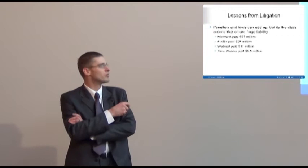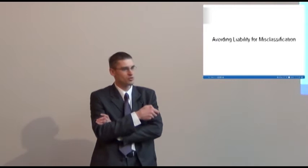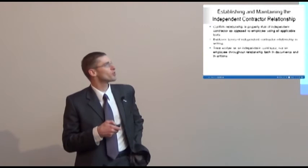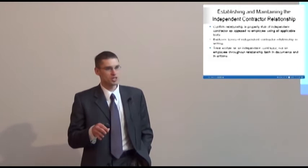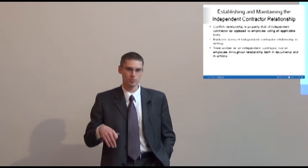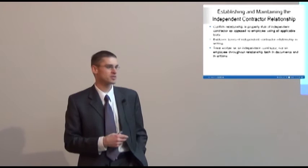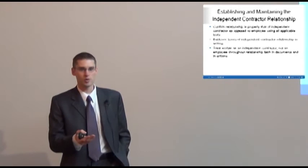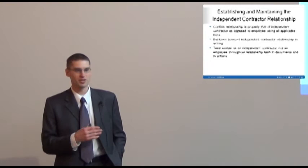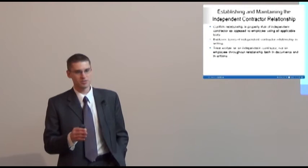So how do you approach the issue from your perspective in setting this up appropriately to make sure your workers are classified correctly? First and foremost, you want to make sure the relationship is properly classified. If you're going to use an independent contractor relationship, you want to make sure that's appropriate. Go through all those control factors we talked about earlier — how that service that individual is providing relates to your business, how that relationship is set up. That's a very fact-intensive analysis depending on the type of business you're operating and what you want that individual to do.